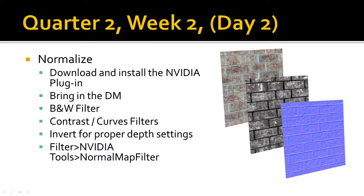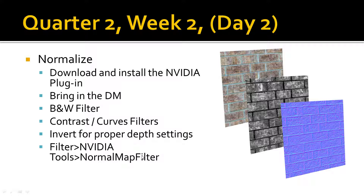Today we are going to download and install the Nvidia plugin for Photoshop. We're going to bring in the diffuse map which we already have, then activate a black and white filter on it, adjust the contrast and curves, invert it for the depth settings we want, and then use the Nvidia Tools Normal Map filter. We're also going to talk a little bit about normal maps so you have a better understanding of how they work and what they can do.